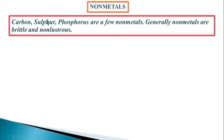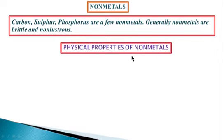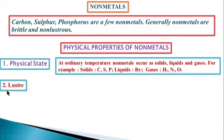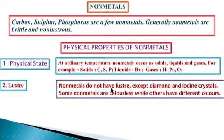Nonmetals — carbon, sulfur, and phosphorus are a few nonmetals. Generally, nonmetals are brittle and non-lustrous. Physical properties of nonmetals: First, physical state — at ordinary temperature, nonmetals occur as solids, liquids, or gases. For example, solids: carbon, sulfur, and phosphorus; liquid: bromine; gases: H₂, N₂, and O₂. Second, luster — nonmetals do not have luster, except diamond and iodine crystals. Some nonmetals are colorless while others have different colors.